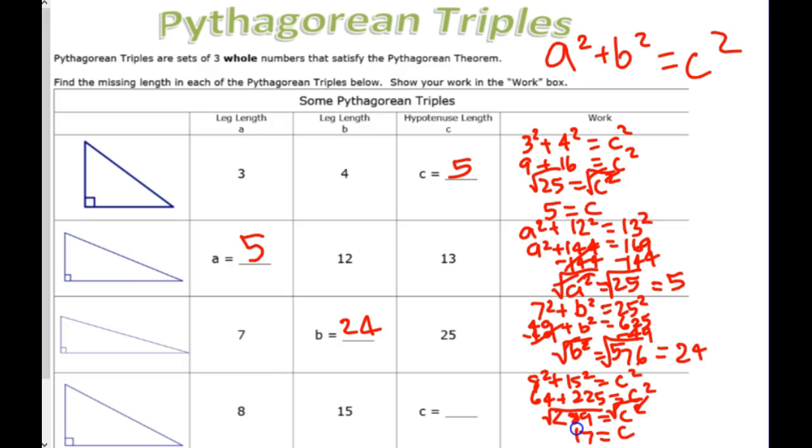What's the square root of 289? 17. Okay? So, the last Pythagorean triple for this page is 8, 15, 17. Okay?